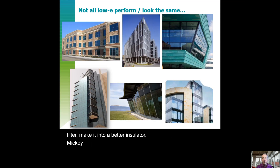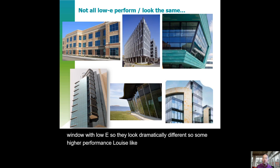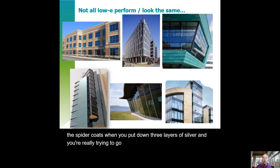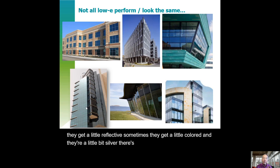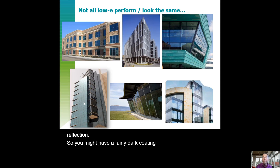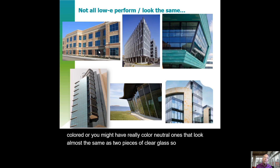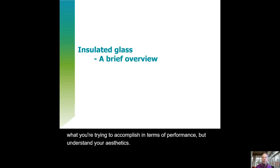Not all low-E looks the same — all of these buildings have low-E glass with double glazed windows, but they look dramatically different. Some higher performance low-E soft coats with three layers of silver can get a little reflective, a little colored, and a little silver. Other coatings are darker and do it through absorption rather than reflection. Or you might have really color-neutral ones that look almost the same as two pieces of clear glass. Target what you're trying to accomplish in terms of performance, but understand your aesthetics.